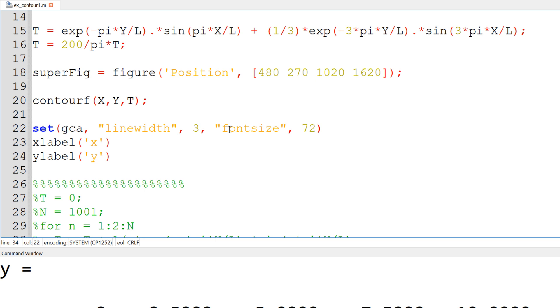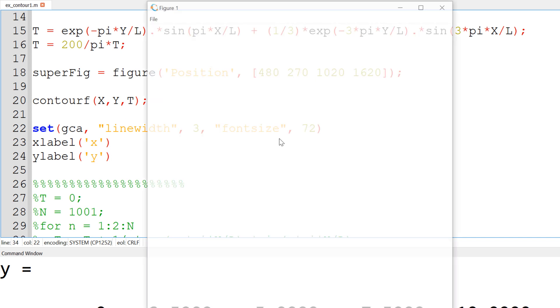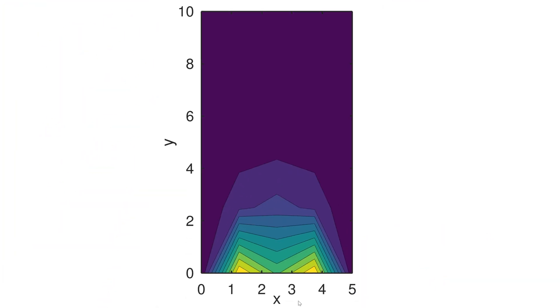Then you can increase your line width to 3 and font size is 72. So this is optional. I also add x label and y label as x and y. And once you're ready, you can hit and run. Then you can see the temperature profile.